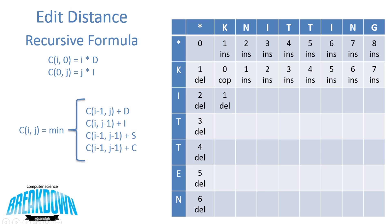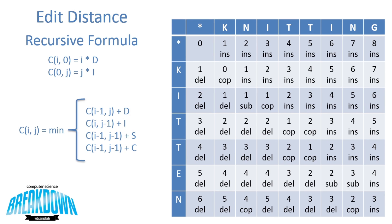Looking at the next cell, we're transforming KI to KN. Although I is not equal to N, we can perform a single substitution coming from the 0 diagonally — cost of 1. At the next level we have I and I, so we can use a copy; we still have a value of 1, and the remainder of that row would be insertions. After filling in the rest of the table, we come up with an optimal cost of 3 — which coincides with our earlier example, confirming our cost was in fact optimal.